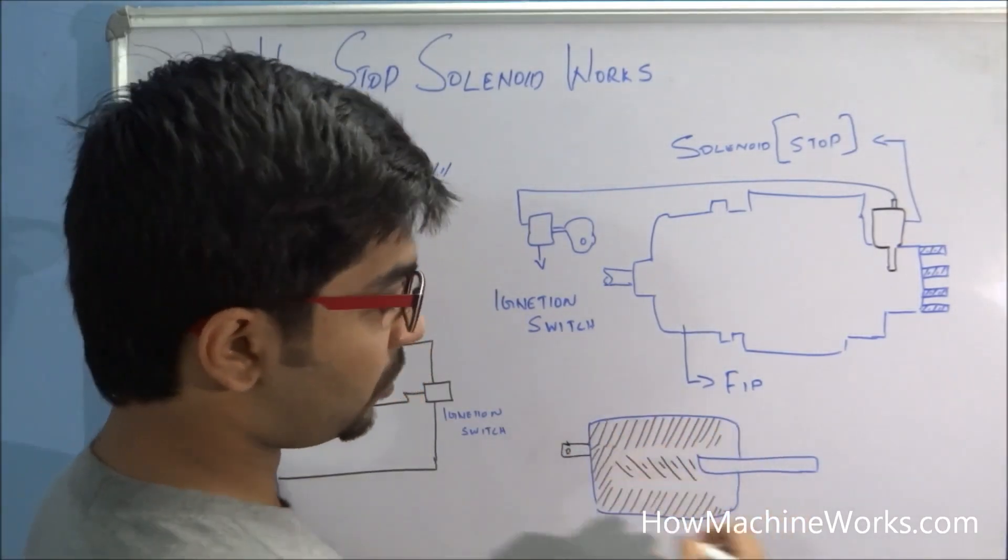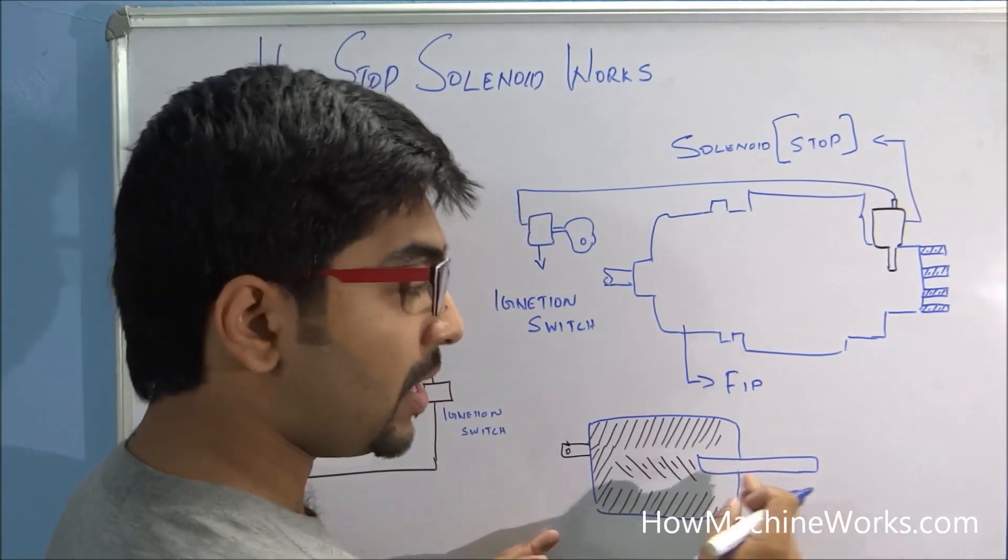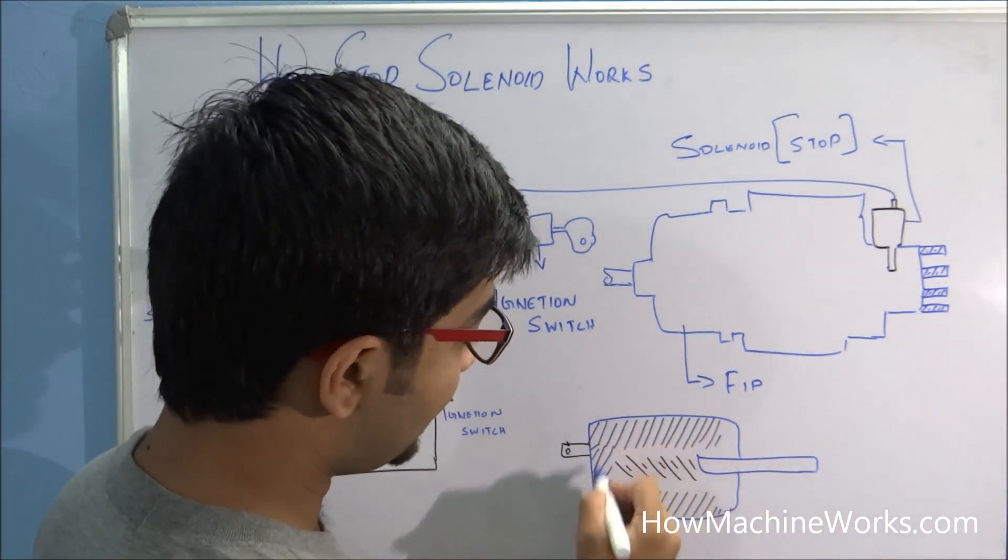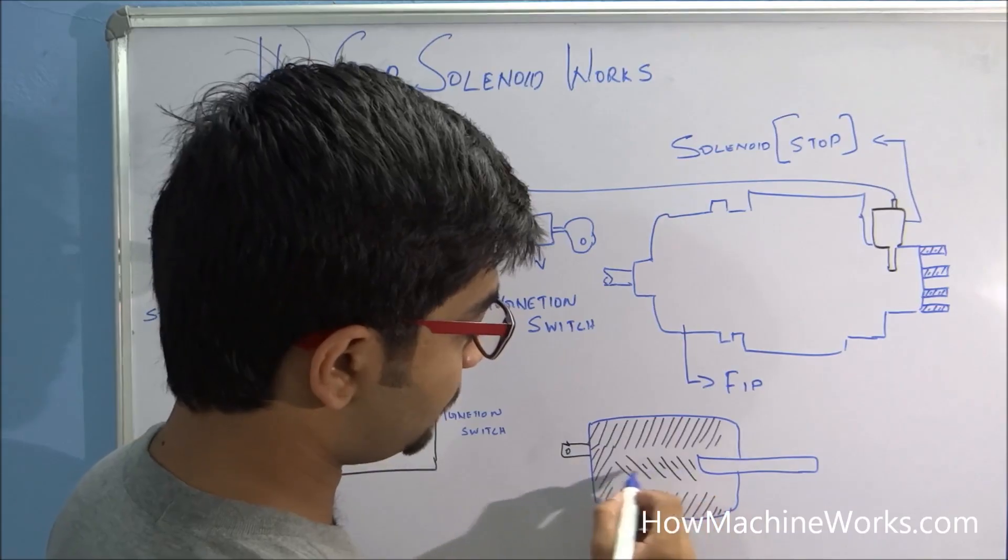So this is the stop solenoid that you have seen. So it has the shaft which you have seen which is going outside and moving inside. Then it has an electromagnet inside which is this one. Then it has the spring.